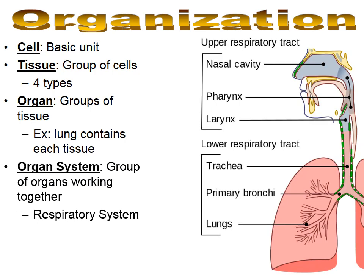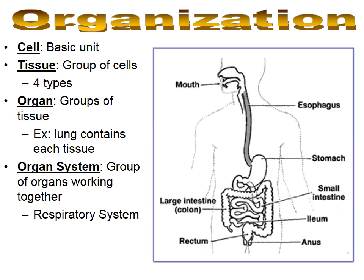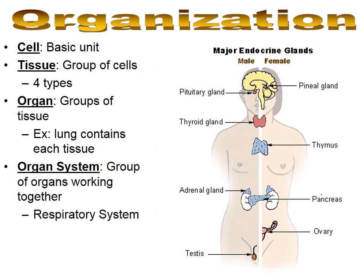The next level of organization is an organ system — a collection of organs that all work together to accomplish a purpose. The respiratory system includes the lungs, trachea, larynx, and pharynx, and it's how we breathe. We obtain nutrition through the digestive system: the esophagus, stomach, small intestine, and large intestine all help break down and digest food. The endocrine system — including the thyroid gland, thymus, adrenal glands, and pancreas — releases hormones and controls hormonal activity in the body.